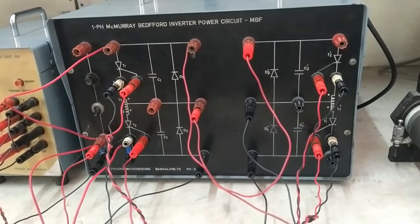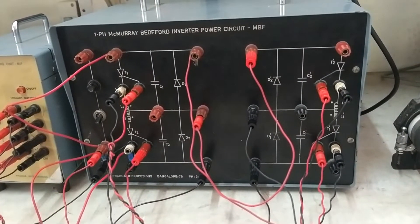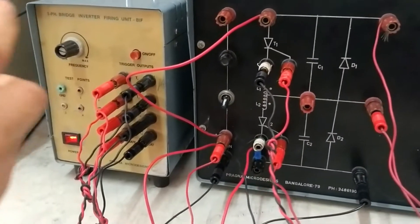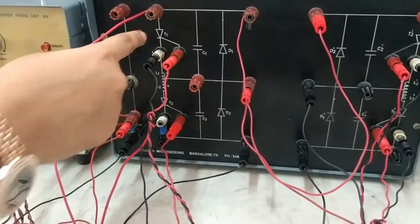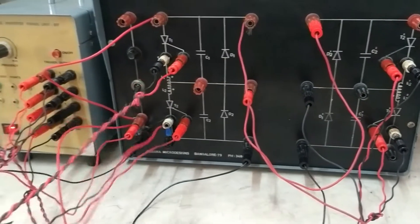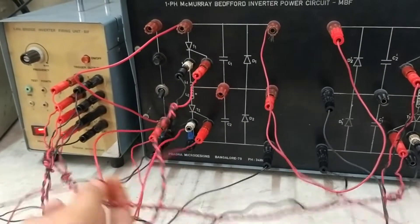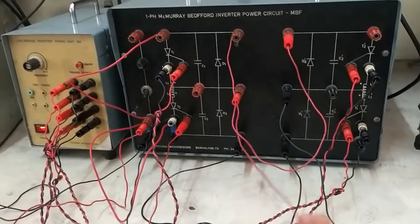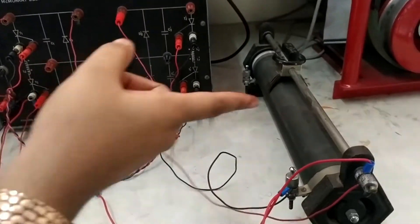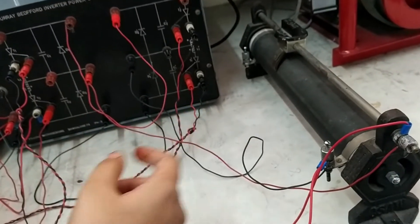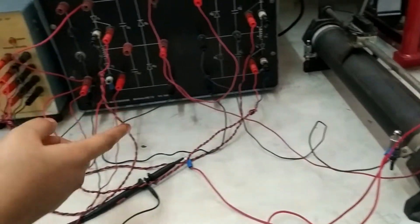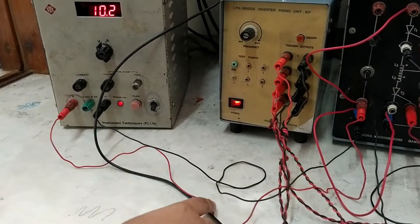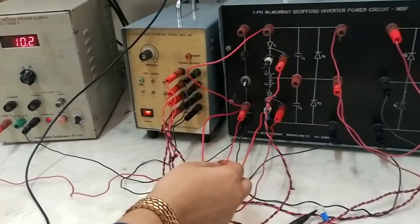Next when we go through the procedure, connect the firing circuit pulses from the bridge inverter firing circuit to the respective SCRs in the power circuit. As you can see the connections I had made in the power circuit. And next connect load at the load points. I had used the resistive load as you can see. And connect the input DC supply of 30 volts from the regulated power supply to this power circuit.